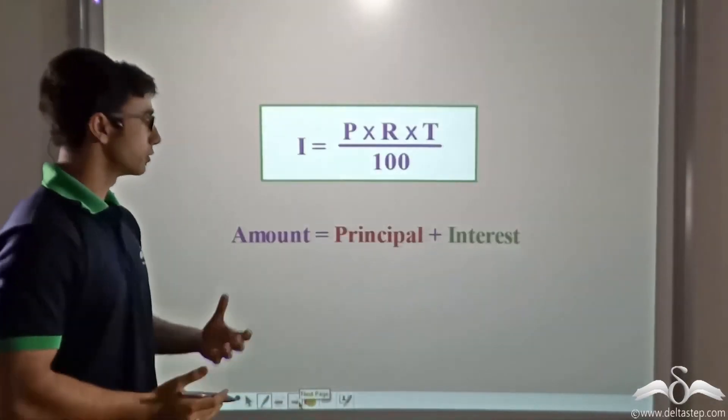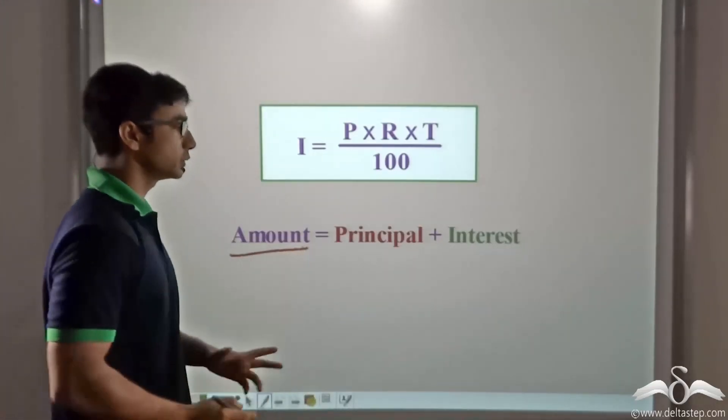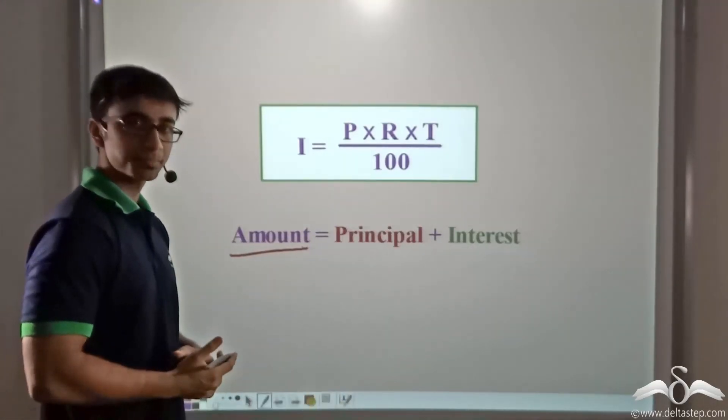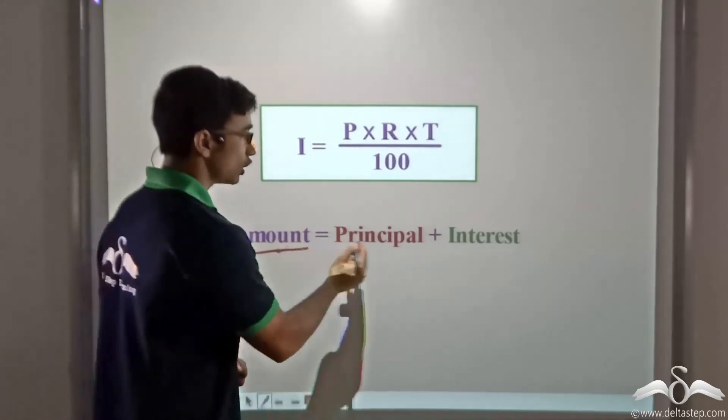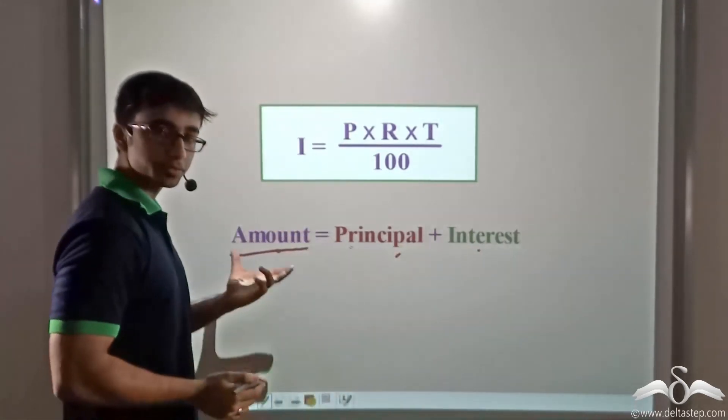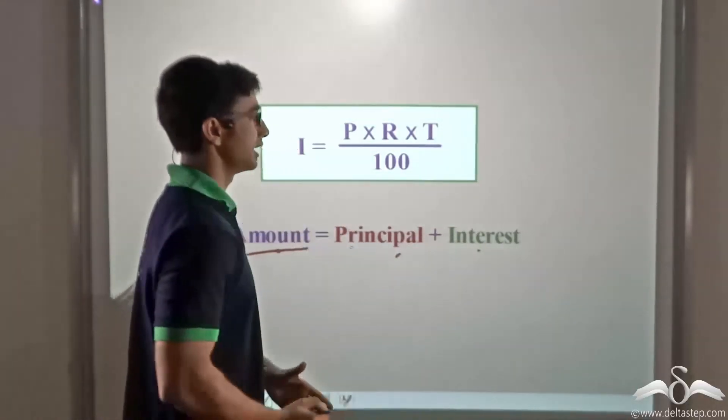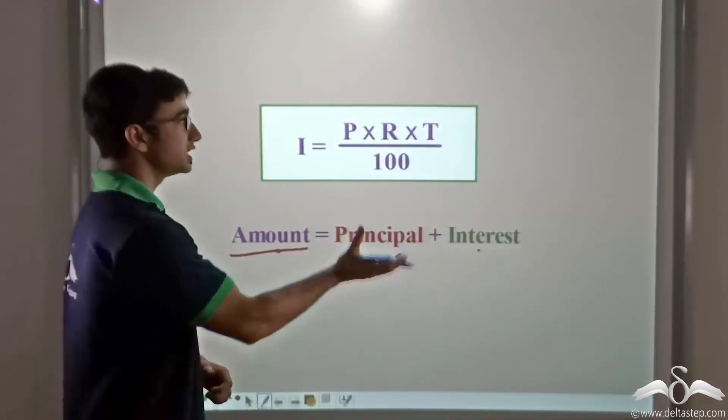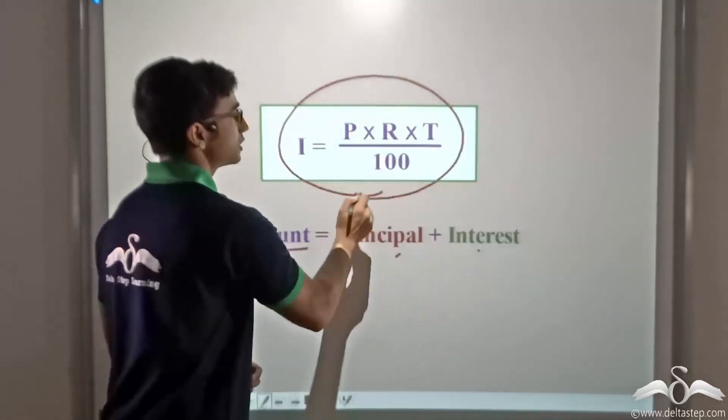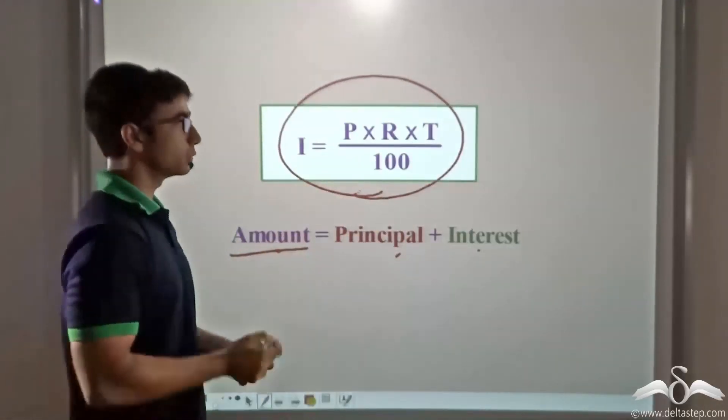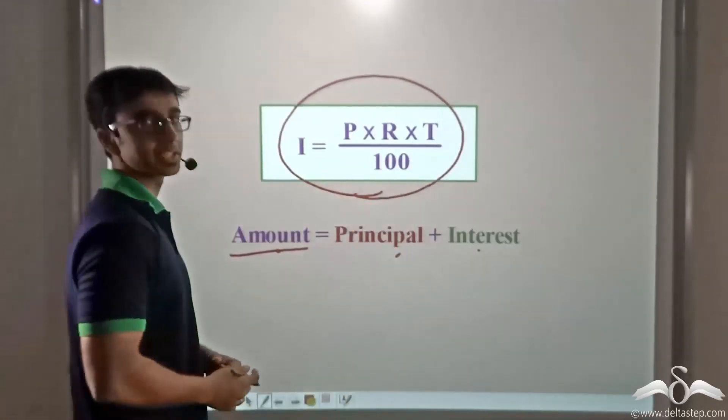Likewise, we know that amount is equal to principal plus interest. Even in that case, if either of two values out of all these three are known, we can calculate the third value, and knowing the third value, we can use it to find out any particular value we might be needing from this equation.